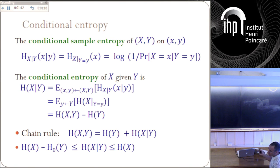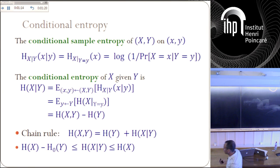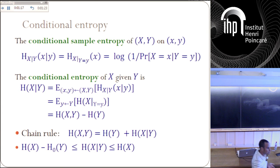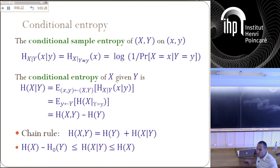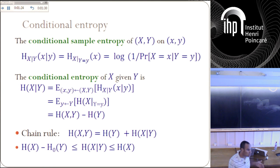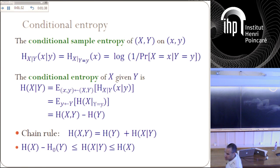When you condition on a random variable — when X is conditioned on Y — you do not increase the entropy. It's always bounded by the entropy of X. And you don't lose too much as well. You don't lose more than the length of Y. By conditioning on Y, you don't lose more entropy than the length of Y.